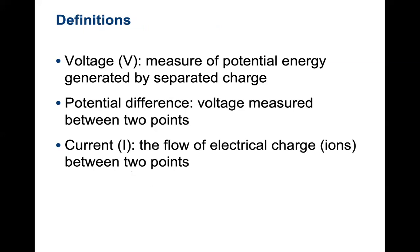We know that resting membrane potential has a voltage of minus 70 millivolts — could be off by 5 or 10, but typically it's minus 70 millivolts. The potential difference is the voltage measured between two points, and the current would end up being the flow of electrical ions between those two points.